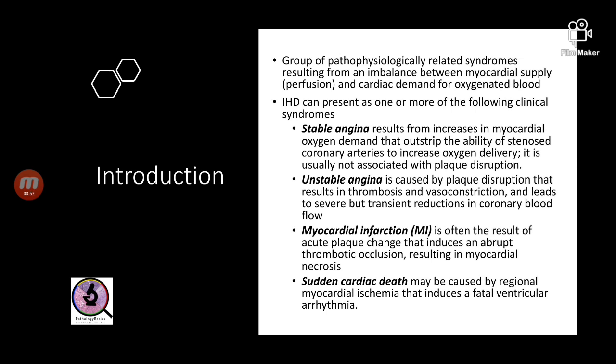Stable angina results from an increase in myocardial oxygen demand with some form of stenosis of the coronary arteries, because of which enough blood does not reach the myocardium. It is not associated with plaque disruption — it is just narrowing of the coronary arteries that leads to improper blood supply to the myocardium, causing pain called stable angina.